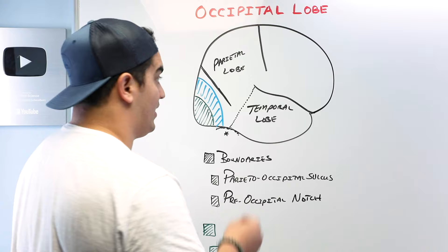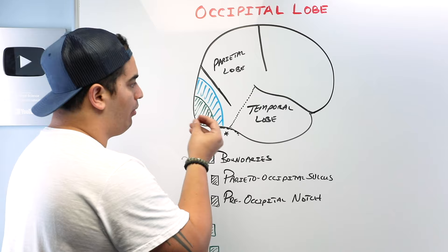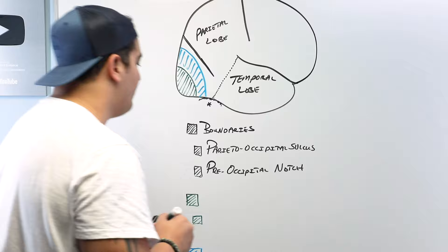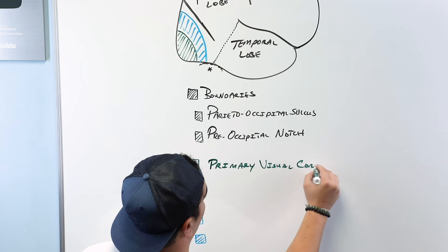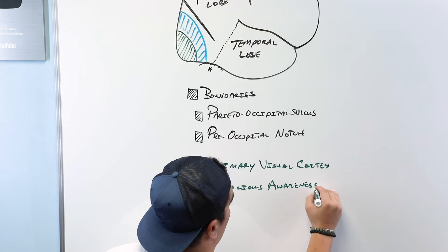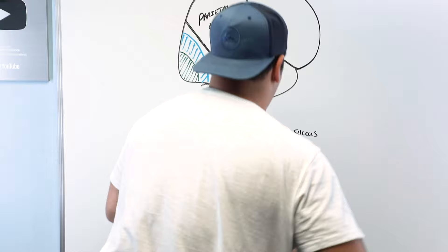Now there are only two things we have to cover within the occipital lobe. The first one is this green structure. We'll cover this one first because it follows the order of primary cortex then association cortex. This green area, most posterior in the occipital lobe, is the primary visual cortex. Its simple function is conscious awareness of visual stimuli.